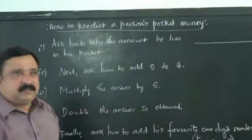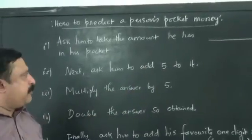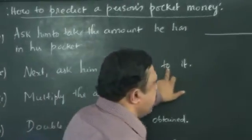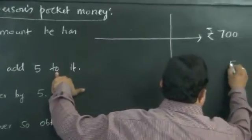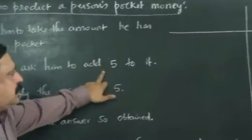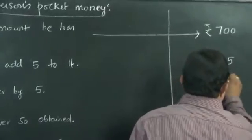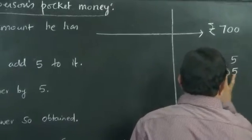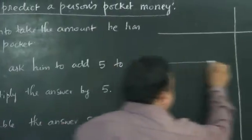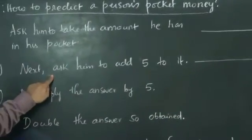So the person tells to himself that he has got 700 rupees. Now he is not telling it to you, he is telling it to himself. Next, ask the person to add 5 rupees. So he is going to add 5 rupees. After adding 5 rupees it becomes 705 rupees. 705 rupees is the answer of the second step.